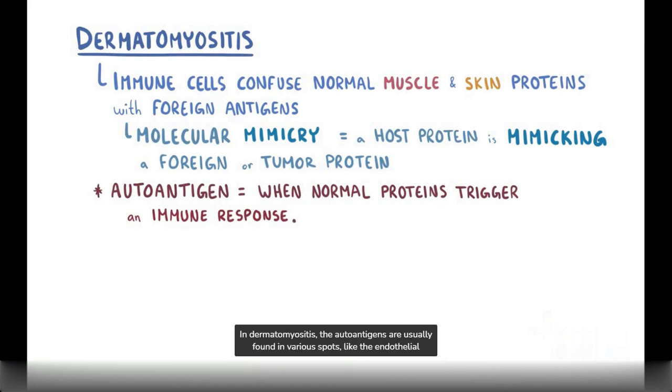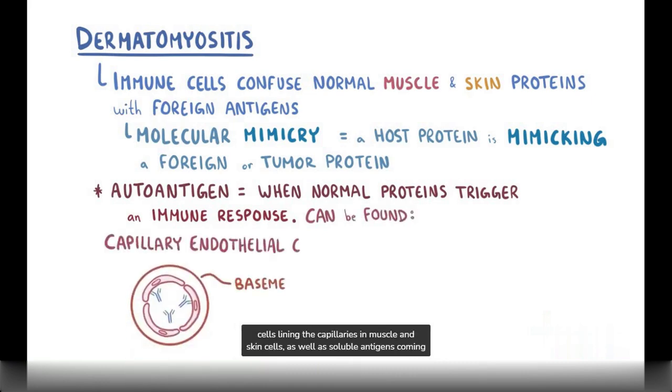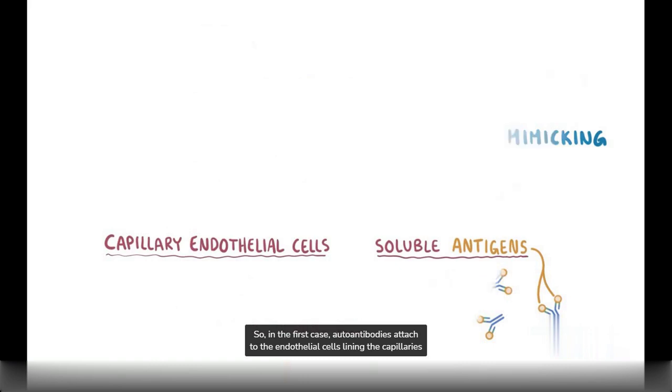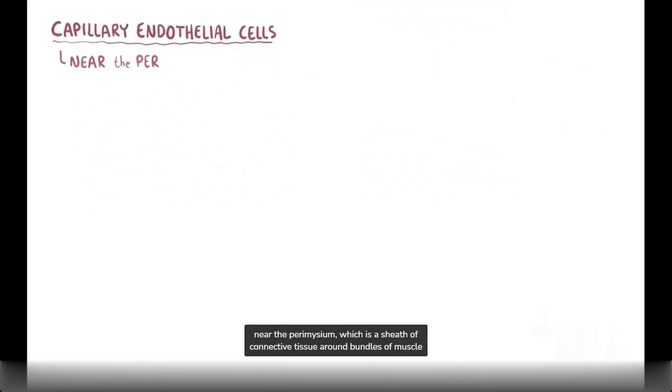In dermatomyositis, the autoantigens are usually found in various spots, like the endothelial cells lining the capillaries in muscle and skin cells, as well as soluble antigens coming from the nucleus or cytoplasm of destroyed muscle cells and skin cells. So in the first case, autoantibodies attach to the endothelial cells lining the capillaries near the perimysium, which is a sheath of connective tissue around bundles of muscle fibers.